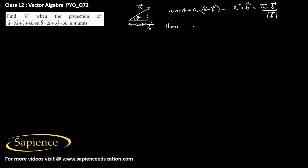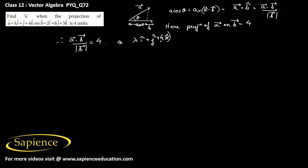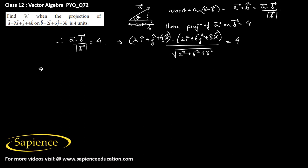The projection of vector a on vector b is given as 4 units, so a-vector dot b-vector divided by magnitude of b-vector equals 4. Here a-vector equals lambda i-cap plus j-cap plus 4k-cap, and the dot product with 2i-cap plus 6j-cap plus 3k-cap, divided by the magnitude of b-vector, which is square root of 2² plus 6² plus 3², equals 4.